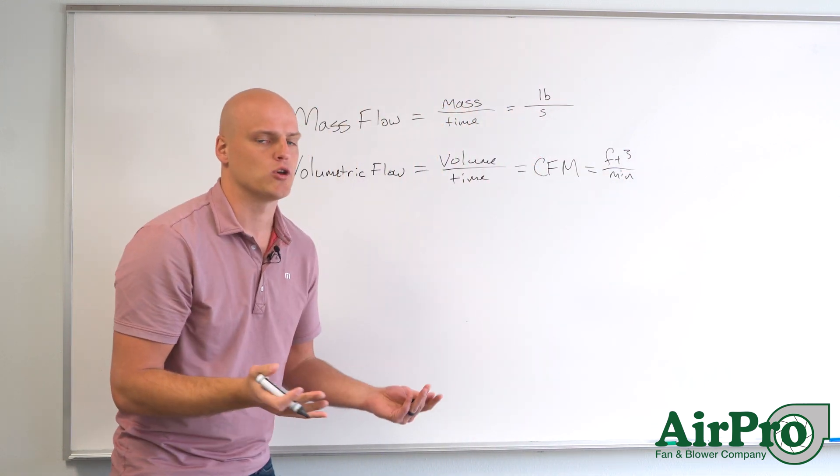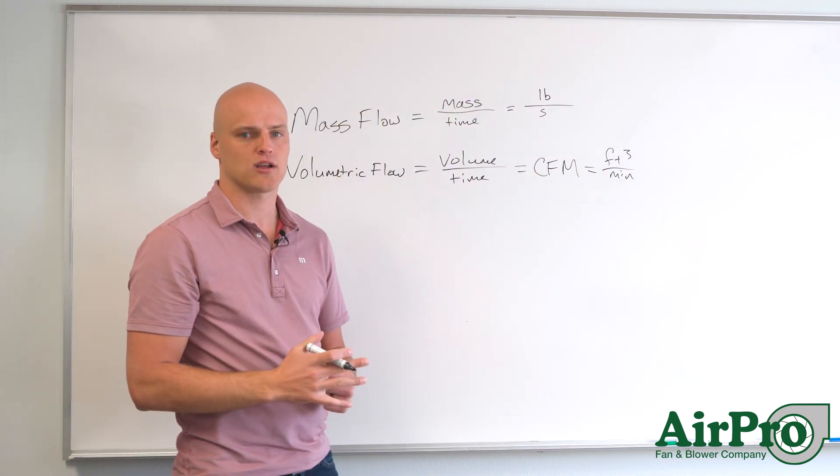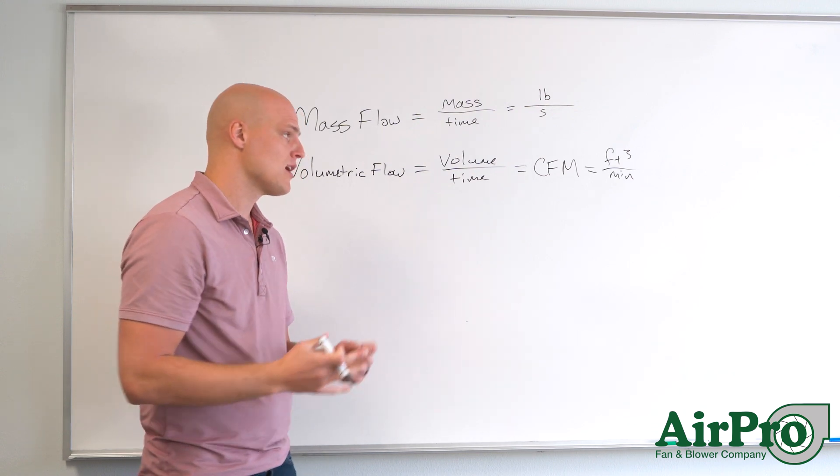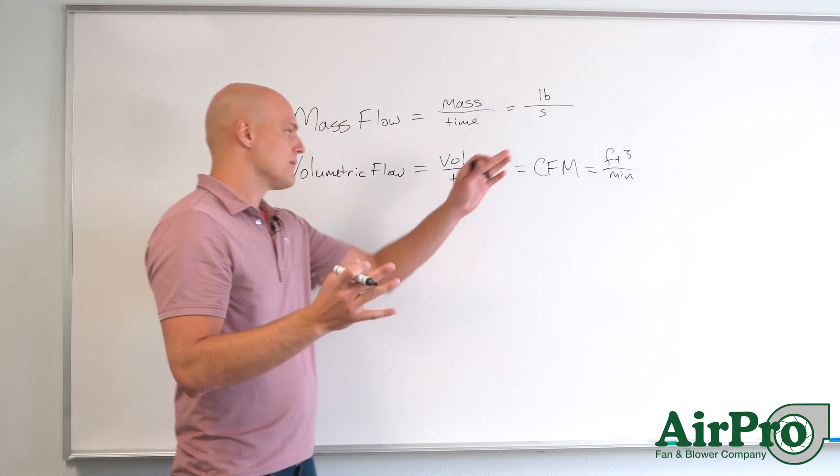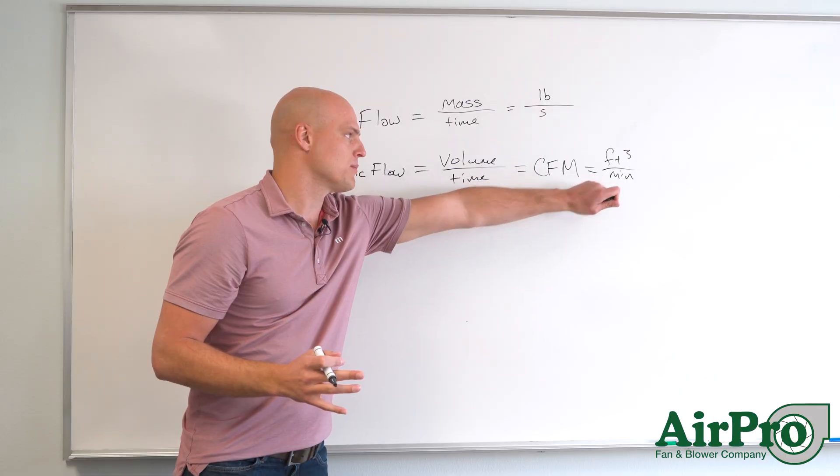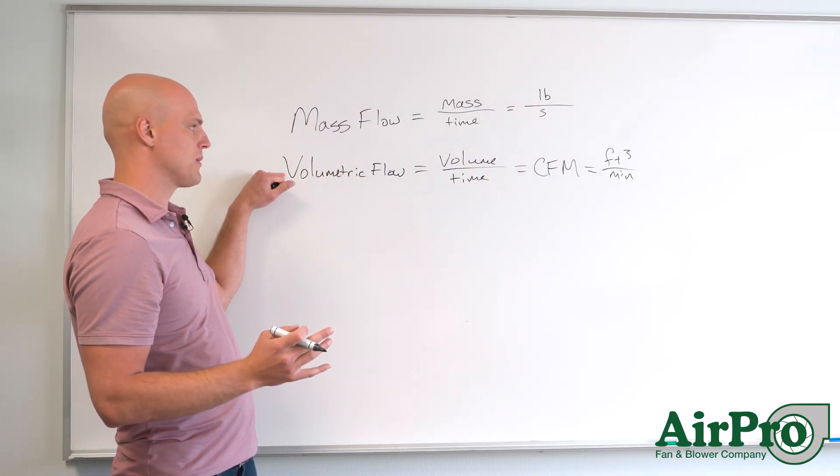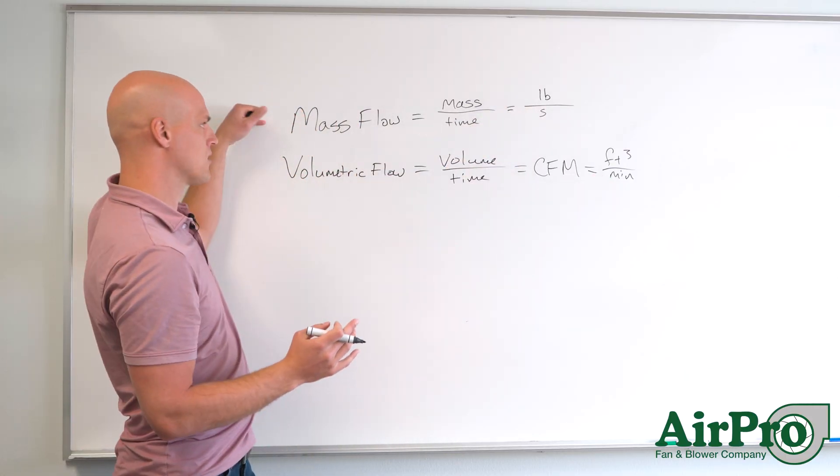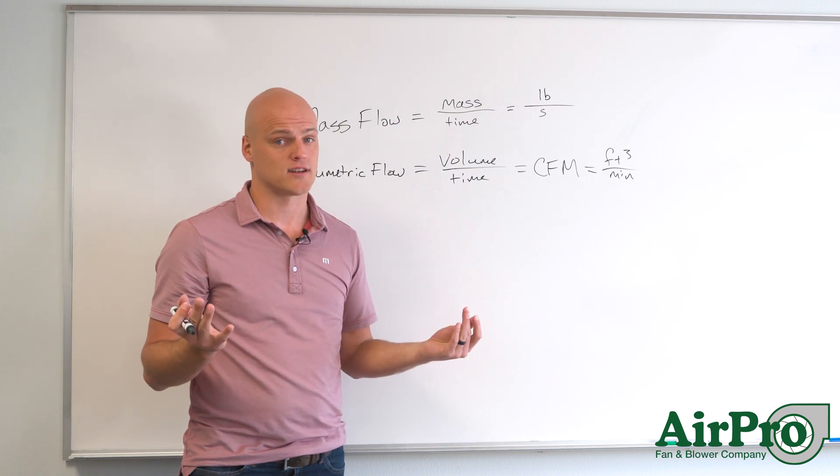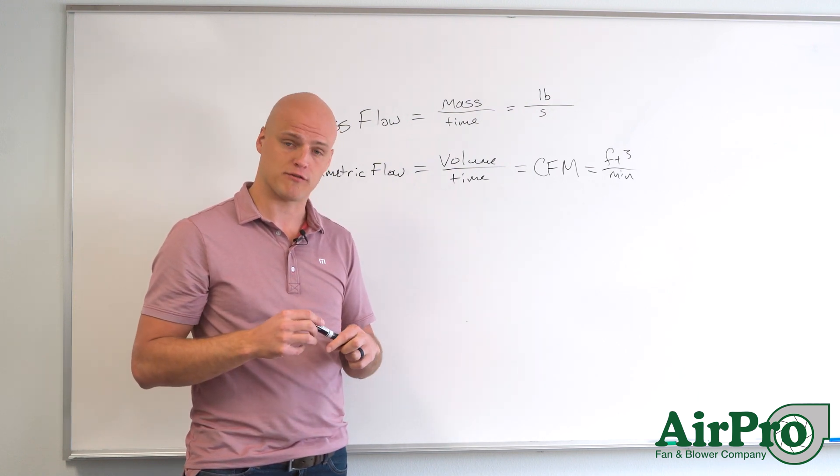And what that stands for is cubic feet per minute. And again, that could be cubic feet per second, per hour, could be cubic meters per second. Whatever your units are, cubic feet per minute, in this case, refers to volumetric flow. So pounds per second refers to mass flow. And that's the difference between the two types of most common flows.